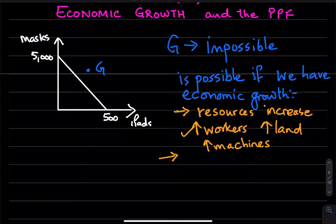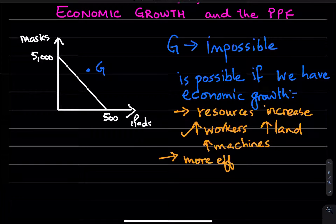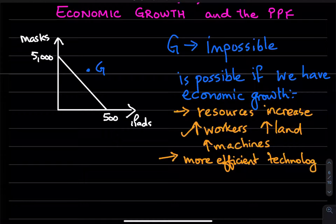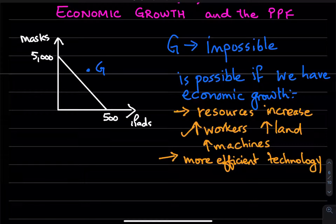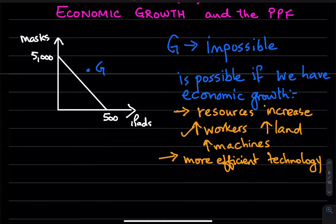Economic growth can also happen if we employ more efficient technology. For example, if we were producing iPads and we now know of a better way to make those iPads more efficiently, then we would be able to push the production possibilities frontier out.